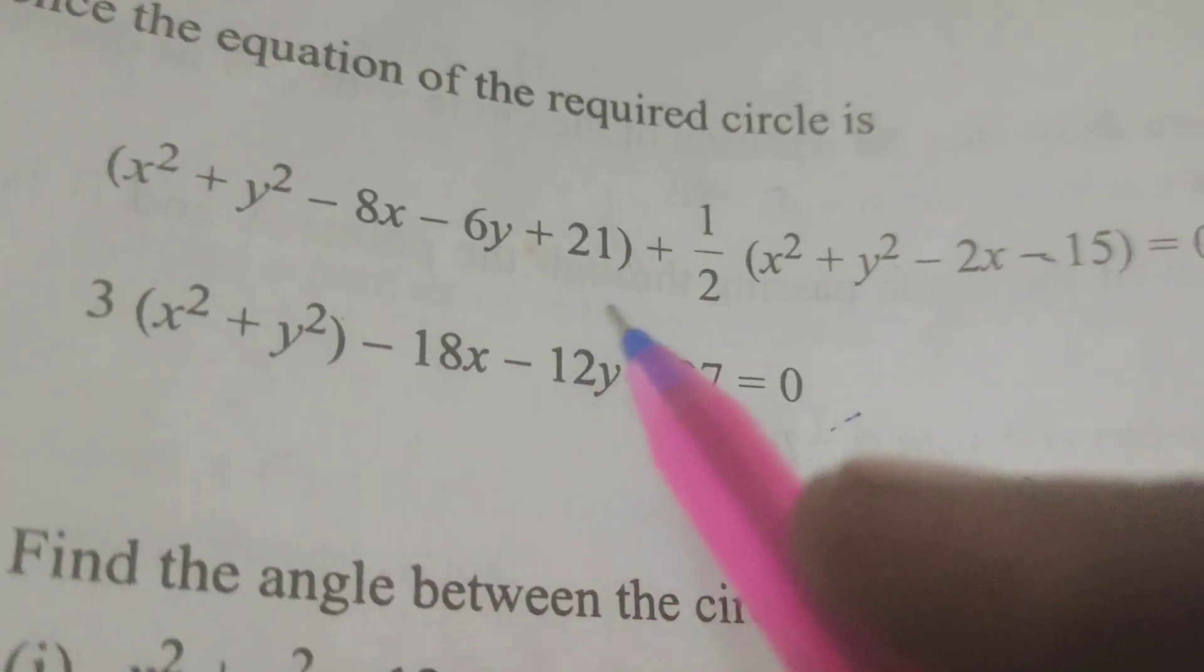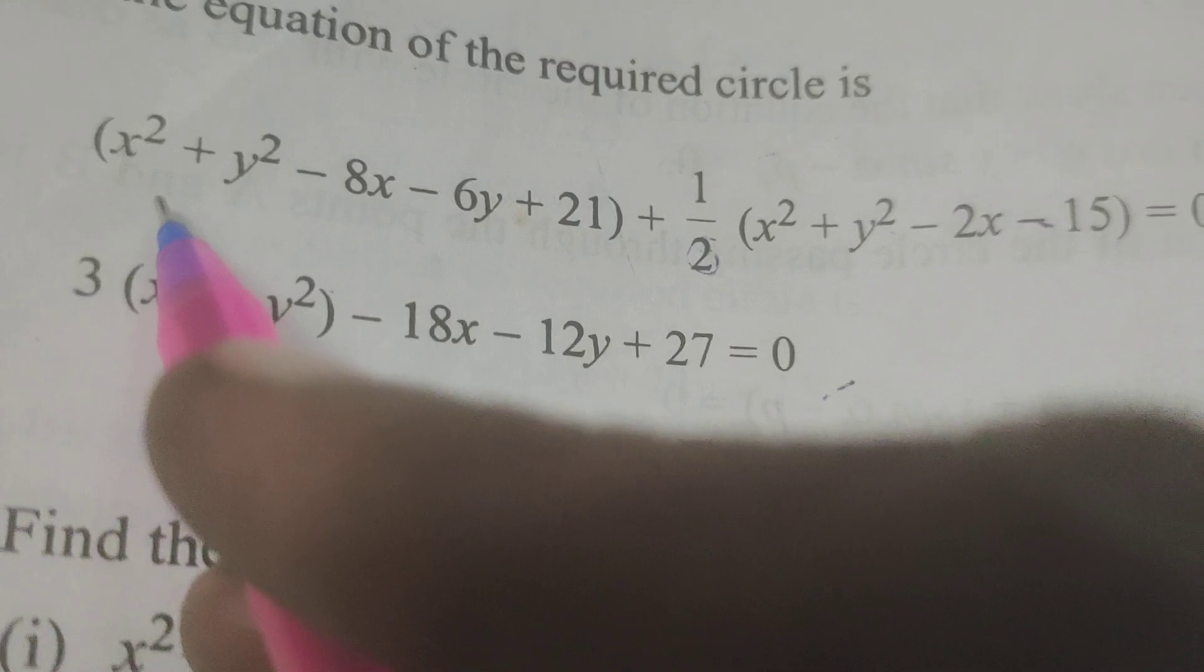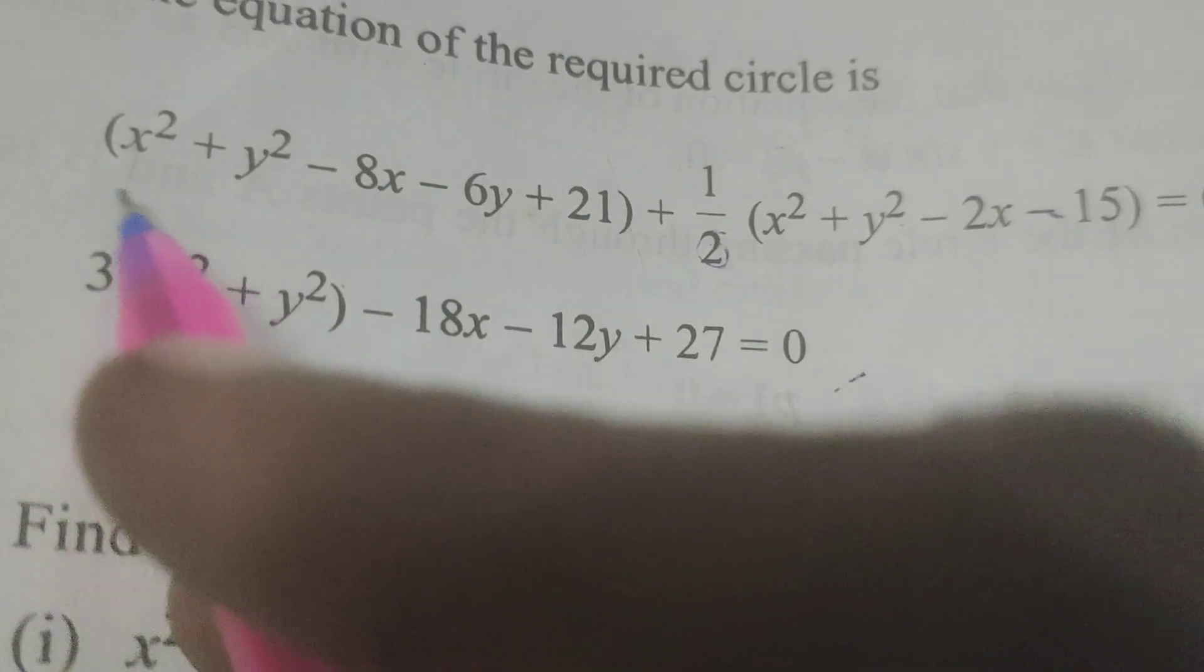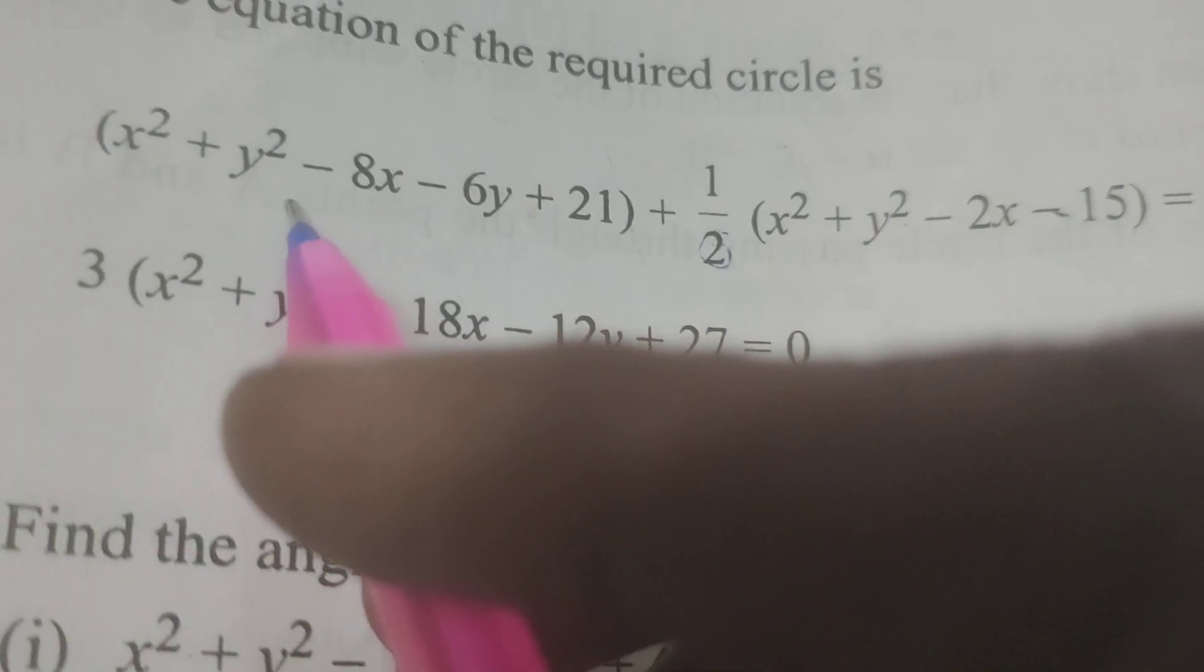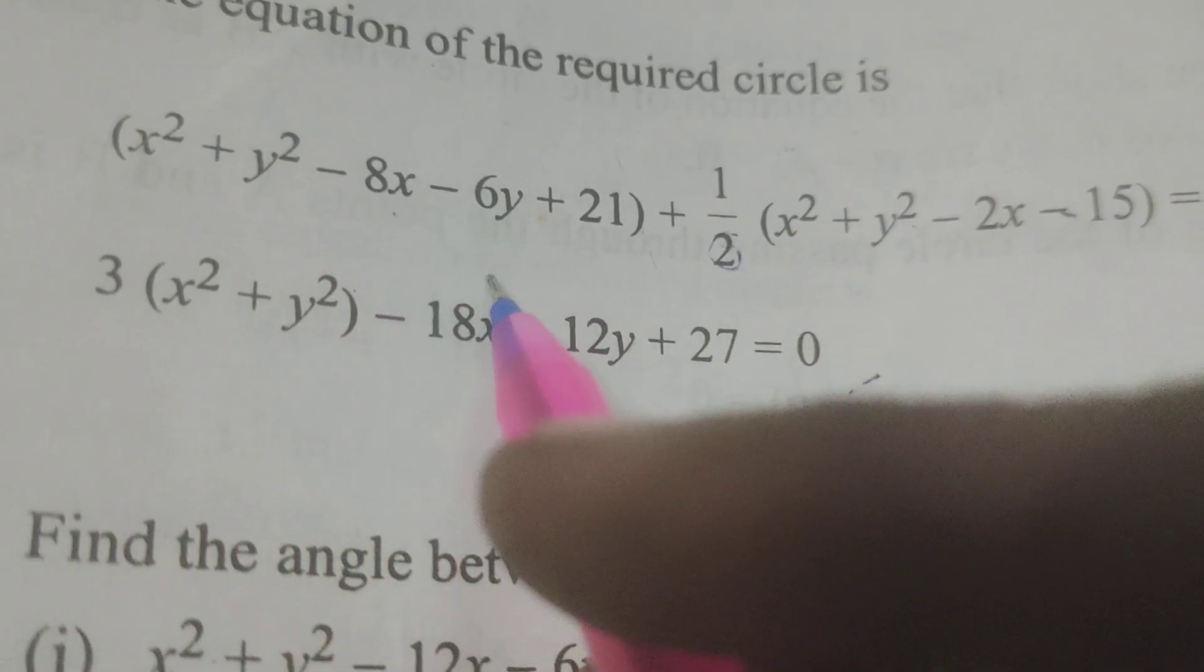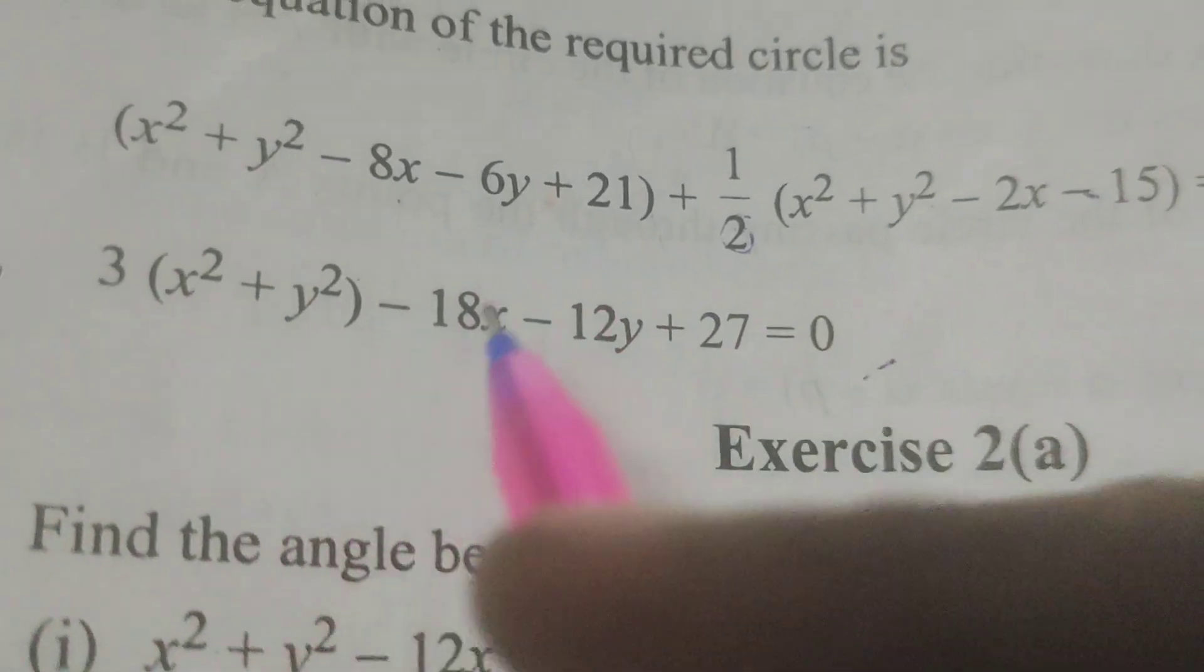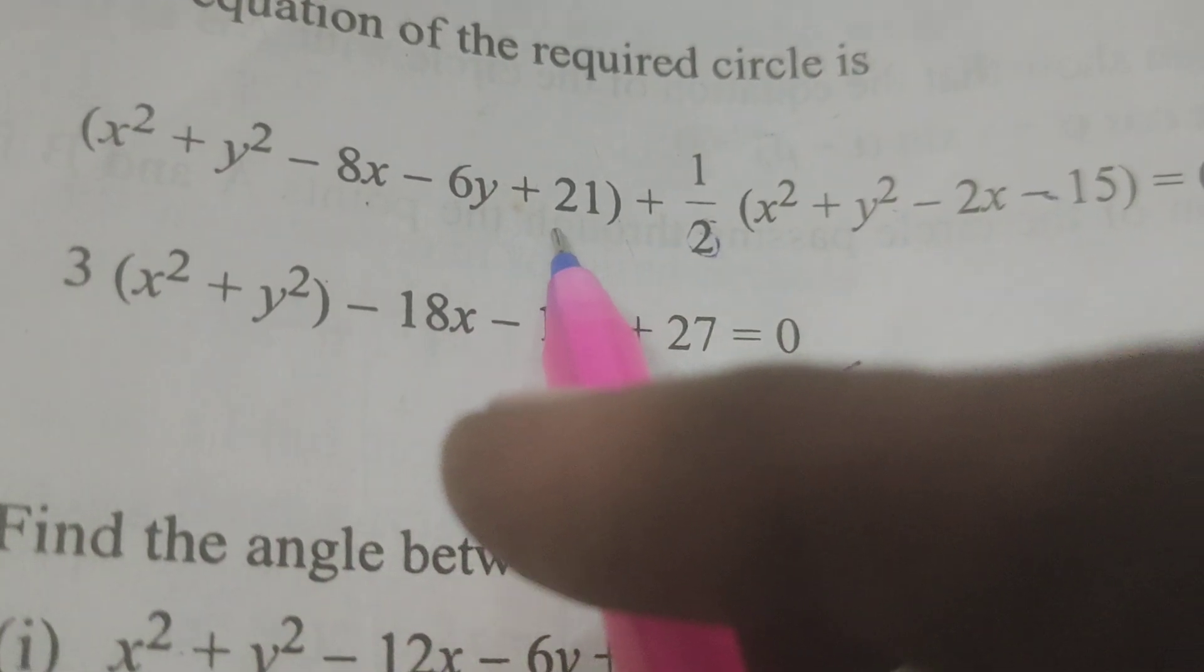Here's the work: Multiplying through by 2, we have 2(x² + y² - 8x - 6y + 21) + (x² + y² - 2x - 15) = 0. This gives 2x² + 2y² - 16x - 12y + 42.